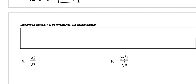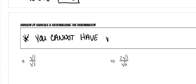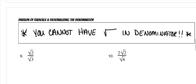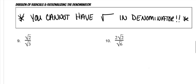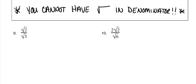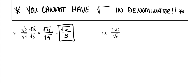Whenever you divide radicals, you cannot have a square root in a denominator — it is not proper. It's a big deal. So in order to get this square root of 3 out of the denominator, you're going to multiply both the top and the bottom by the square root of 3. On the top, the square root of 2 times the square root of 3 is the square root of 6. On the bottom, the square root of 3 times the square root of 3 is the square root of 9. And we know the square root of 9 is 3. So that's your answer: square root of 6 over 3.